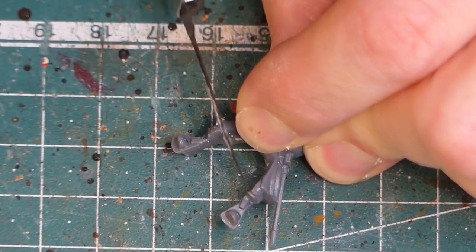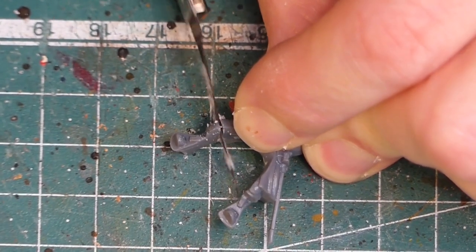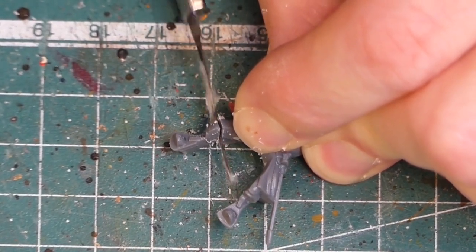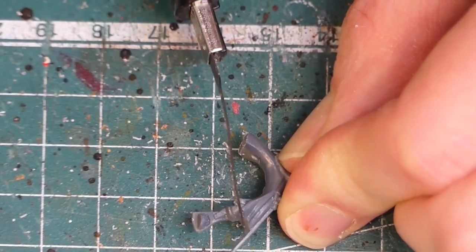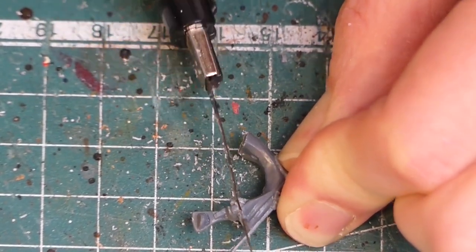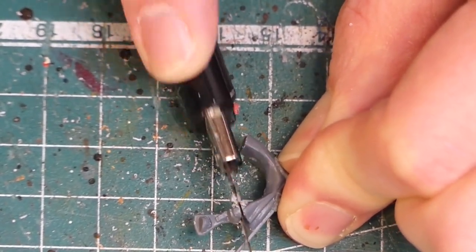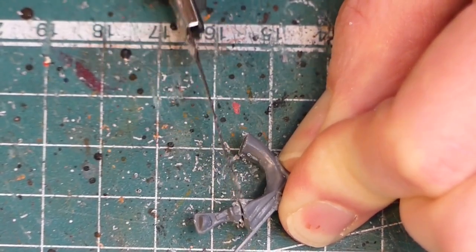The first tool I'm using is the saw. I cut off the legs just above the knees. The remaining parts are of no use anymore, so on this occasion they don't find their way into the bits box but into the dustbin.